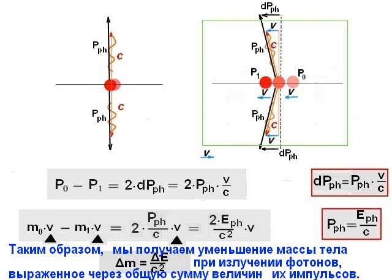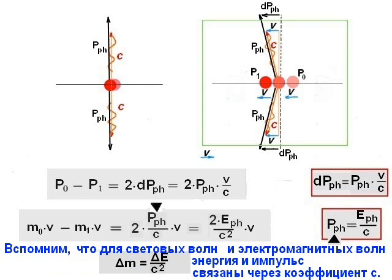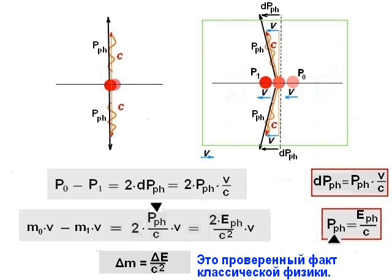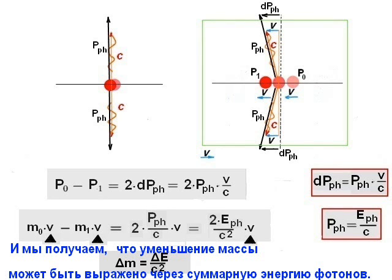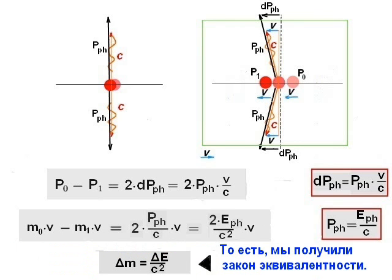Thus, we have the decrement of mass at the emission of photons, which is expressed through the total of values of photon momenta. Recall that for the light waves and for the electromagnetic waves, the energy and momentum are connected by a coefficient c. It is a proven fact of classical physics. Therefore, we obtain that the mass loss can be expressed in terms of the total energy of photons. That is, we have the mass-energy equivalence formula.